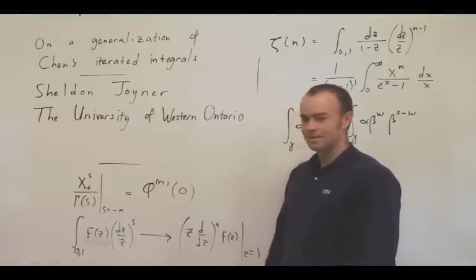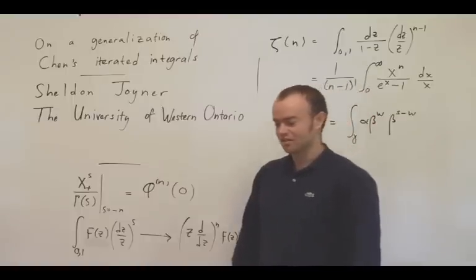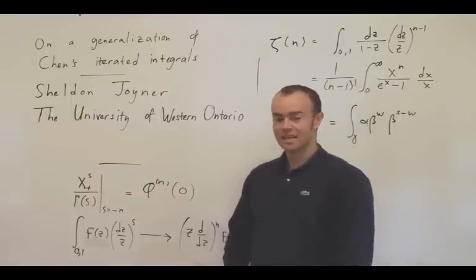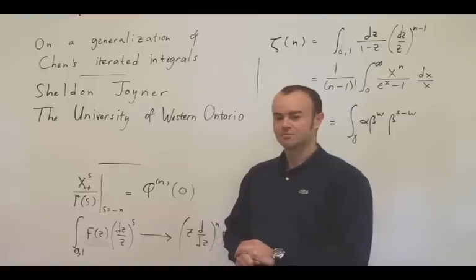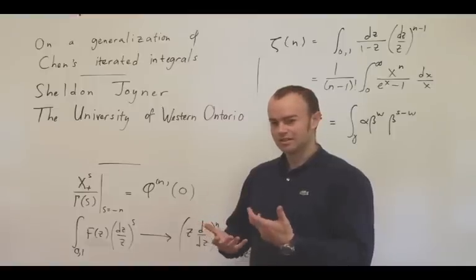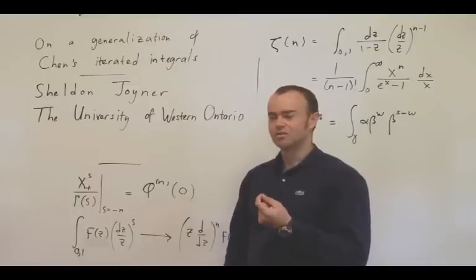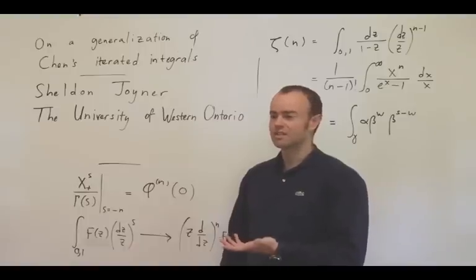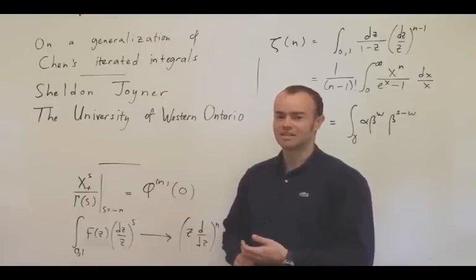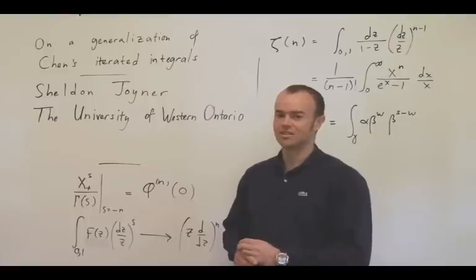A final application in the paper is to show that the Dedekind zeta function, although it's known that it admits an analytic continuation and a functional equation, one cannot prove these facts using Riemann's contour integral approach. An obstruction is provided by the irrationality of the residue at s equals 1.